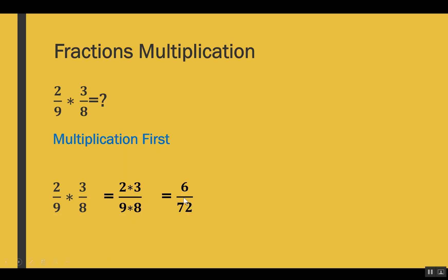We can simplify the result by dividing the numerator and denominator by the highest common factor, which is 6 in this case. So if we divide we get 1 in the numerator and 12 in the denominator. Our result is 1 out of 12. That was the multiplication first method.